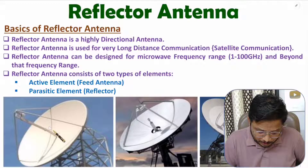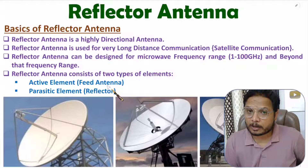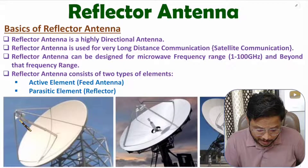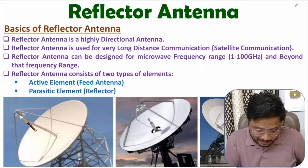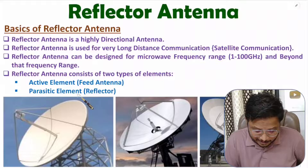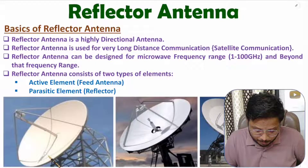Here you can observe: this is the parabolic reflector plate, and here we have the active element — the feed antenna. Usually the feed antenna will be a horn antenna with a reflector antenna, but one can use other antennas as a feed. The reflector plate is the parasitic element, which reflects EM waves radiated by the feed antenna.